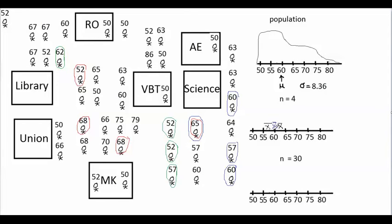Because of sampling variability, some samples end up being more accurate than others. The sample whose mean height was very close to the population mean was the most accurate. These other samples weren't quite as accurate, because one overestimated and one underestimated the mean height of the university.